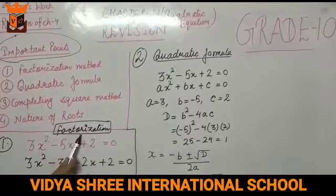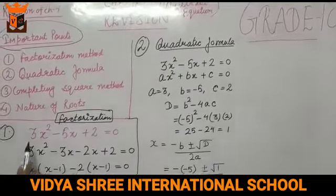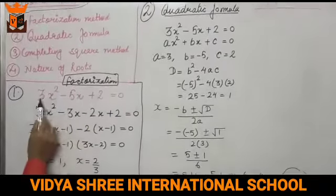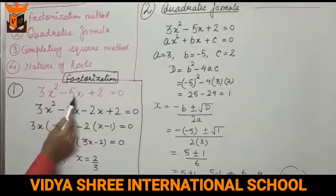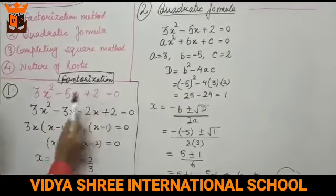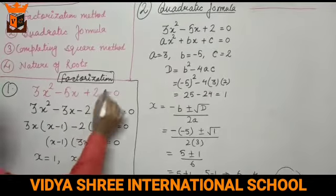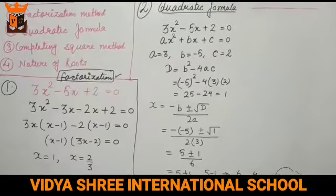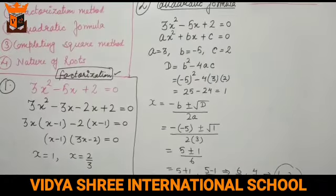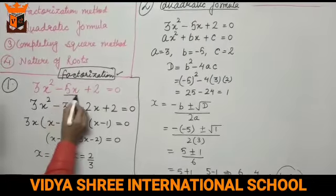So the first topic is factorization method. We have a quadratic equation: 3x squared minus 5x plus 2 is equal to 0. We are going to use the factorization method. If you start splitting the middle term, you need to find two factors.